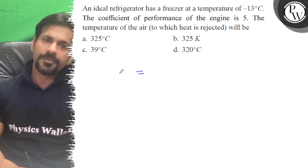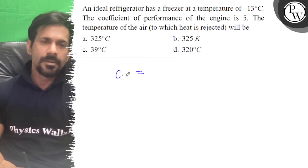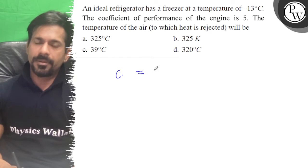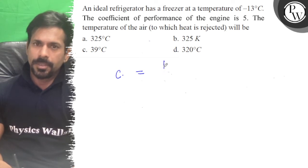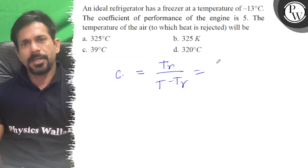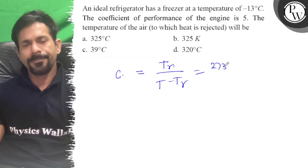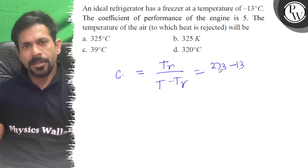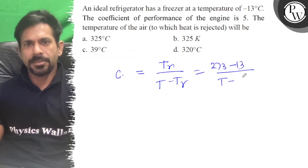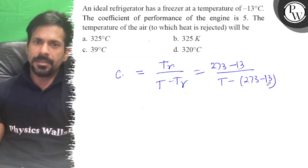So you have a coefficient of refrigerator. Your coefficient of performance is TR upon T minus TR. So TR is now 273 minus 13 upon T minus 273 minus 13, and that is equal to 5.